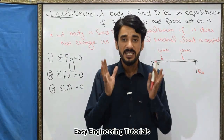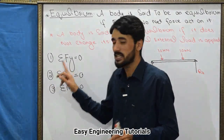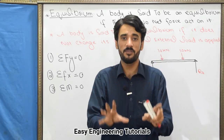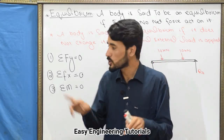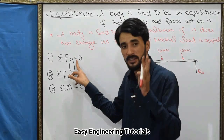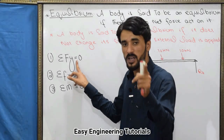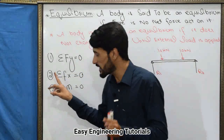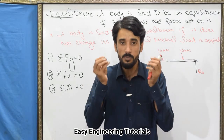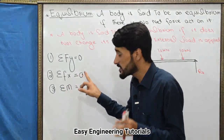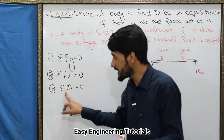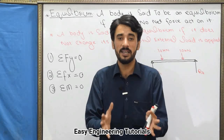So for equilibrium: the summation of forces along the Y-axis is equal to zero; the summation of forces along the X-axis is equal to zero — if this is not zero, the body will not be in equilibrium. The third condition is that the summation of moments in the body must also be equal to zero.